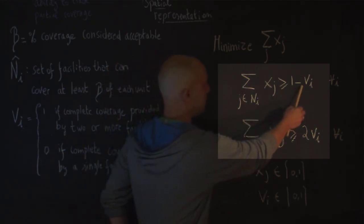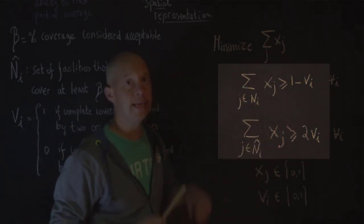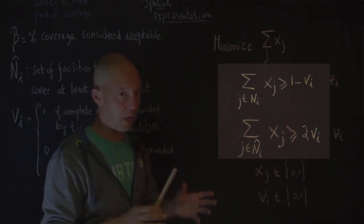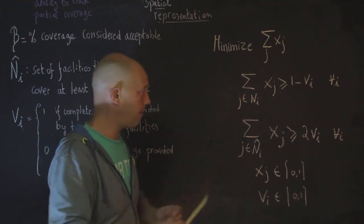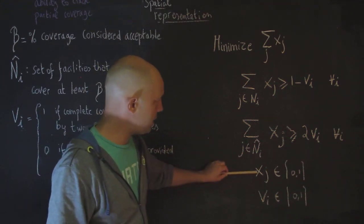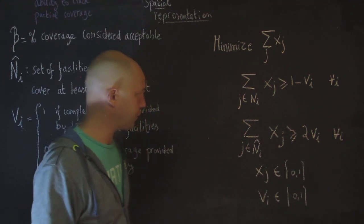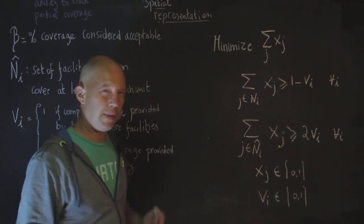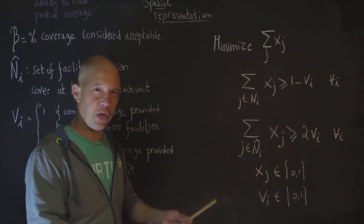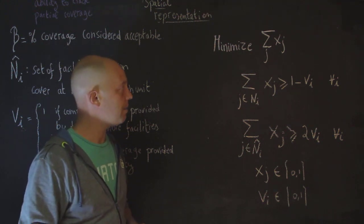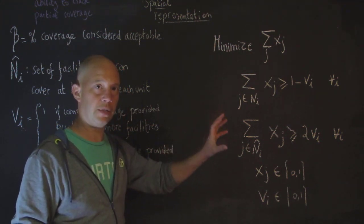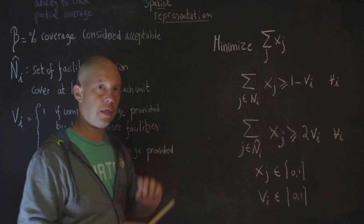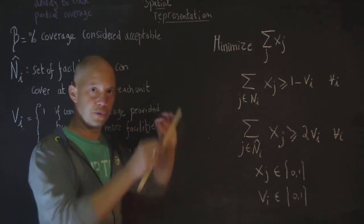And then in that case, this is 1 minus 1. And then we don't need any facility that can provide full coverage. So, that's kind of the balancing act. And then finally, you have the integer constraint. So, that's one way to represent partial coverage. There are other ways to do it. But I think this is really an improvement on this idea of using the point as opposed to maybe using a polygon.